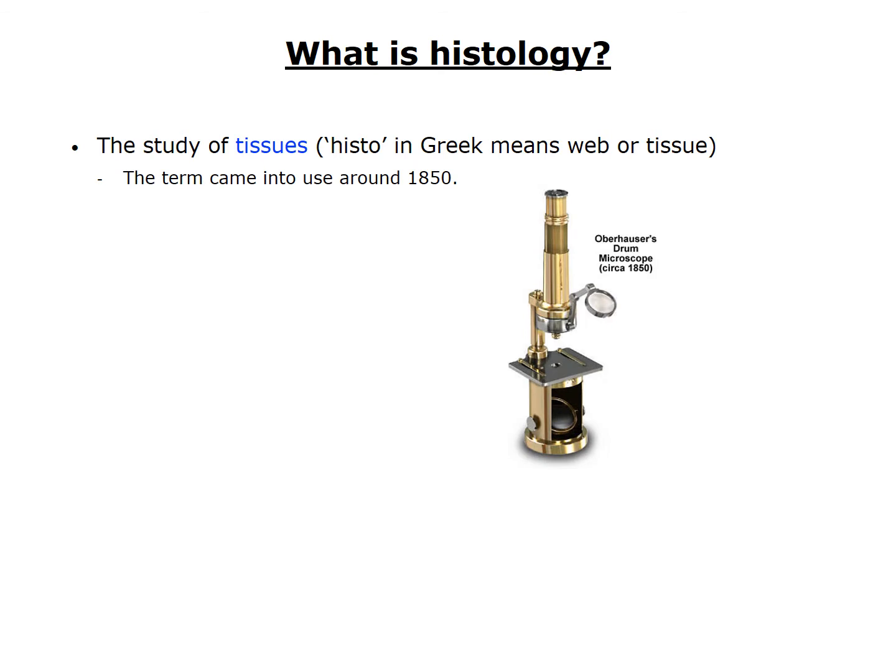The term histology began appearing around 1850, along with advances in the construction of light microscopes and related equipment. Although it would take several more decades to develop the theory and components required to make light microscopes of the quality we use today, the instruments at that time were improving, and scientists were developing techniques to study all parts of the body with microscopes.